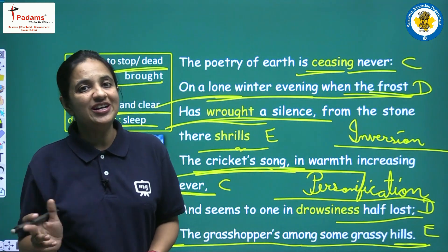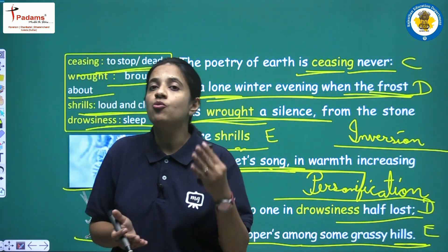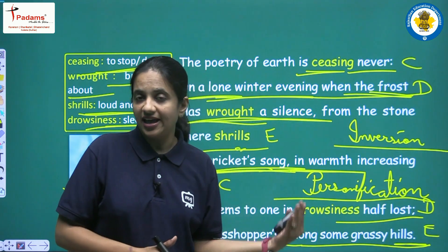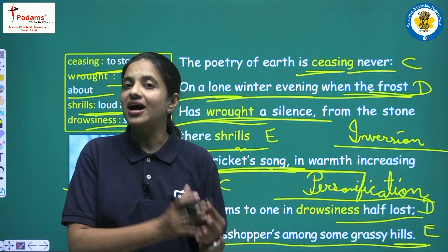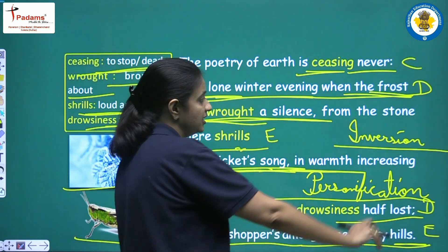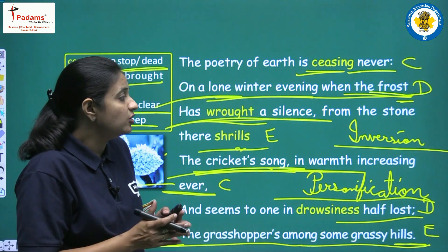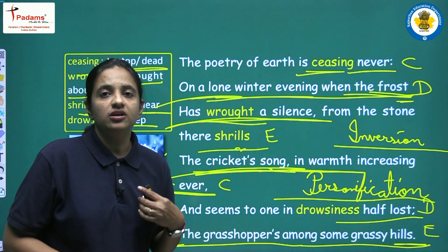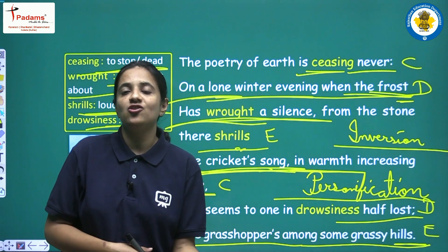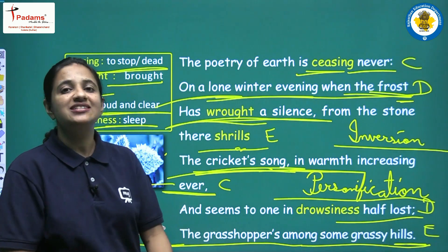So we are having inversion, personification, and alliteration, and one more literary device — enjambment. Enjambment means when one sentence continues to the next line without any pause or punctuation mark at the end. For example, after 'frost' there is no punctuation mark, and the same sentence continues to the next line. These are the examples of enjambment in the poem.